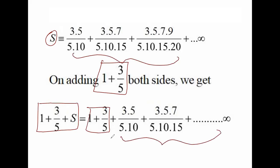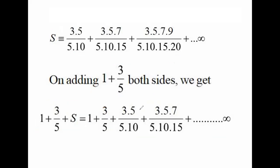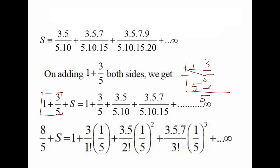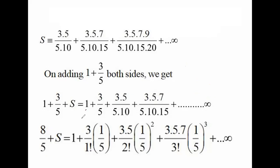Step 3: 1 + 3/5. Taking LCM: 1 + 3/5 = 5/5 + 3/5 = 8/5. So 1 + S = 8/5 + the remaining series. Now identifying factors: 1 factor, 2 factor, 3 factor — this matches the binomial formula pattern with terms (1/5), (1/5)², (1/5)³ and so on.